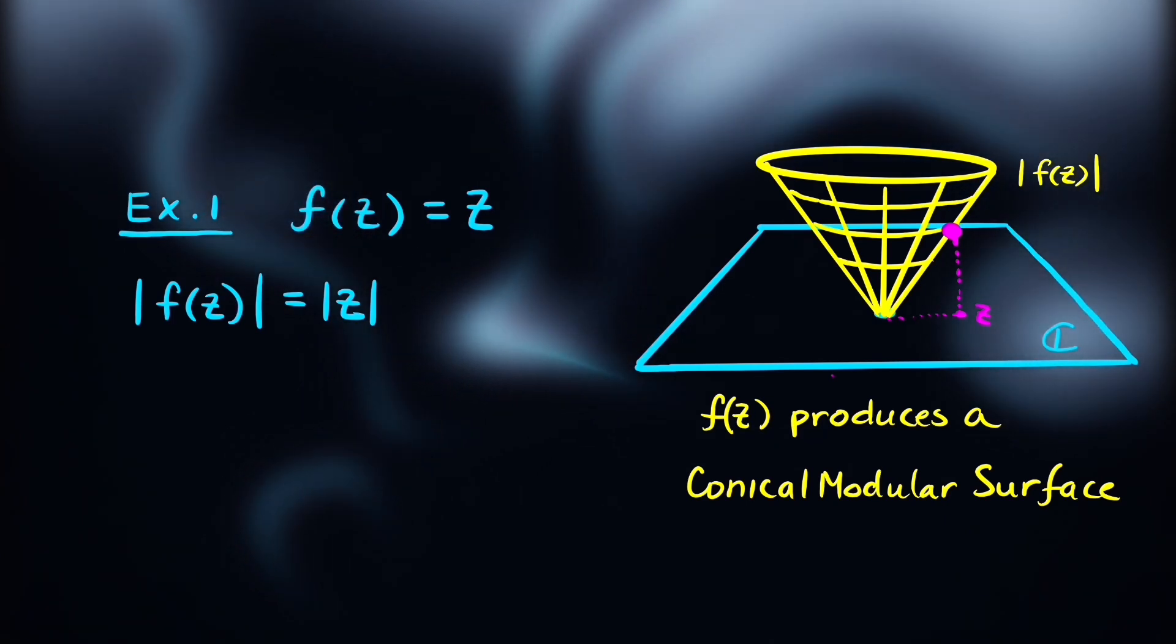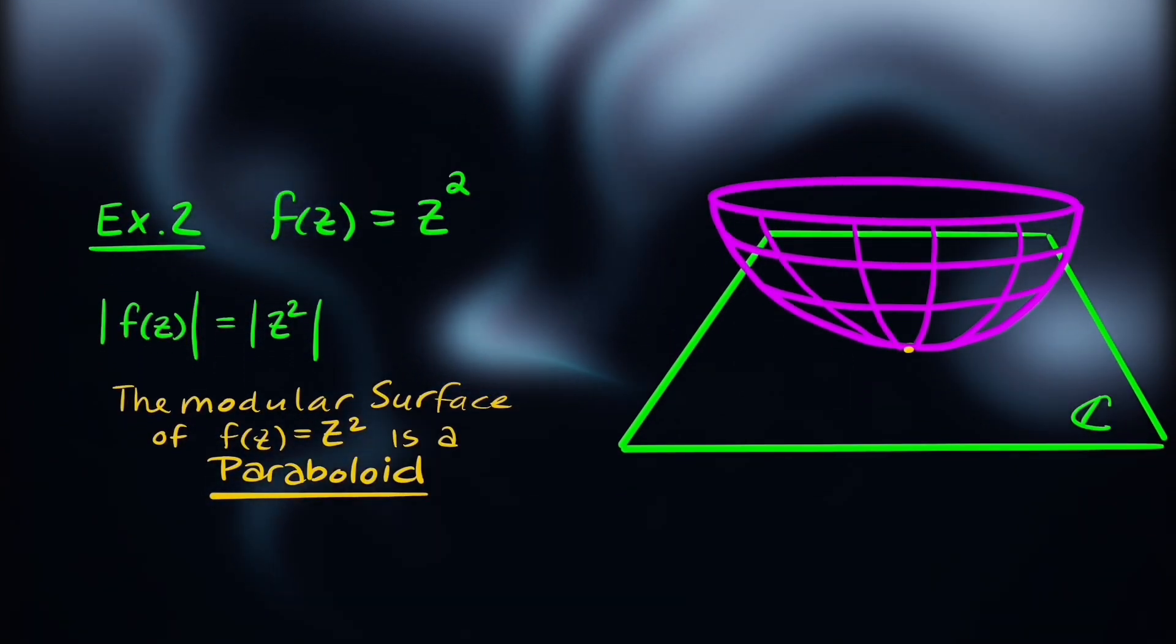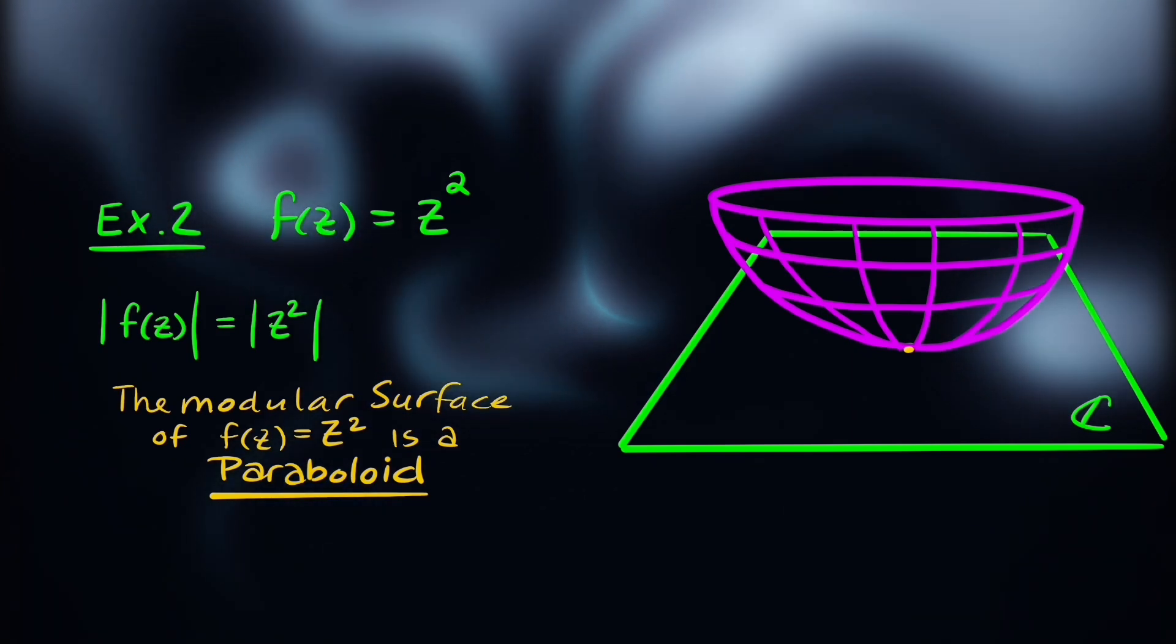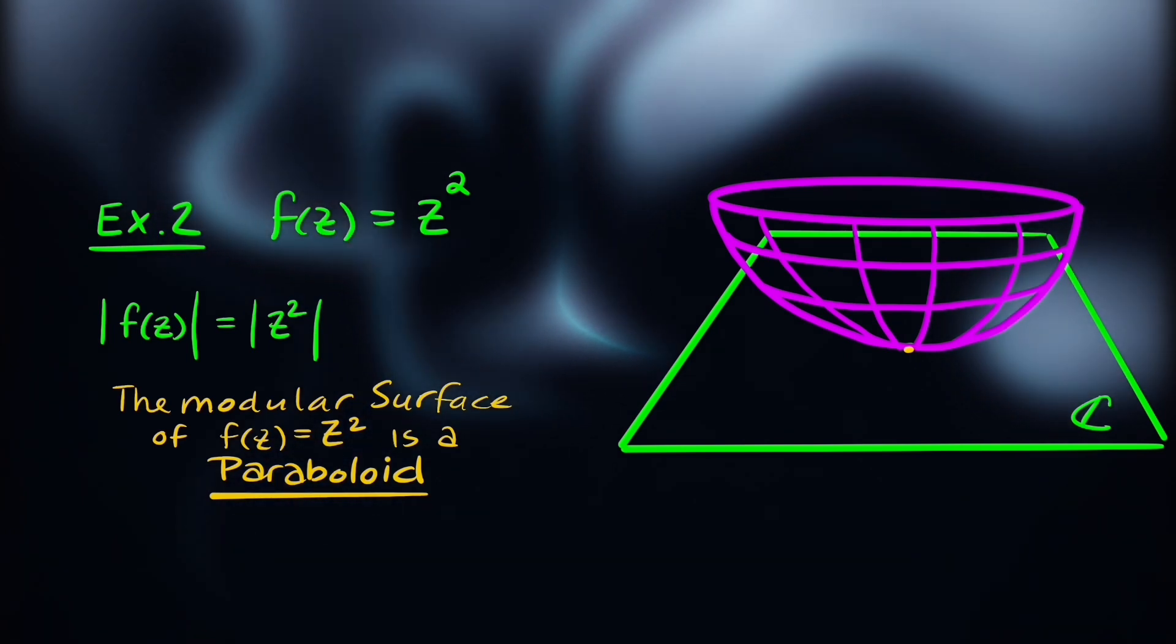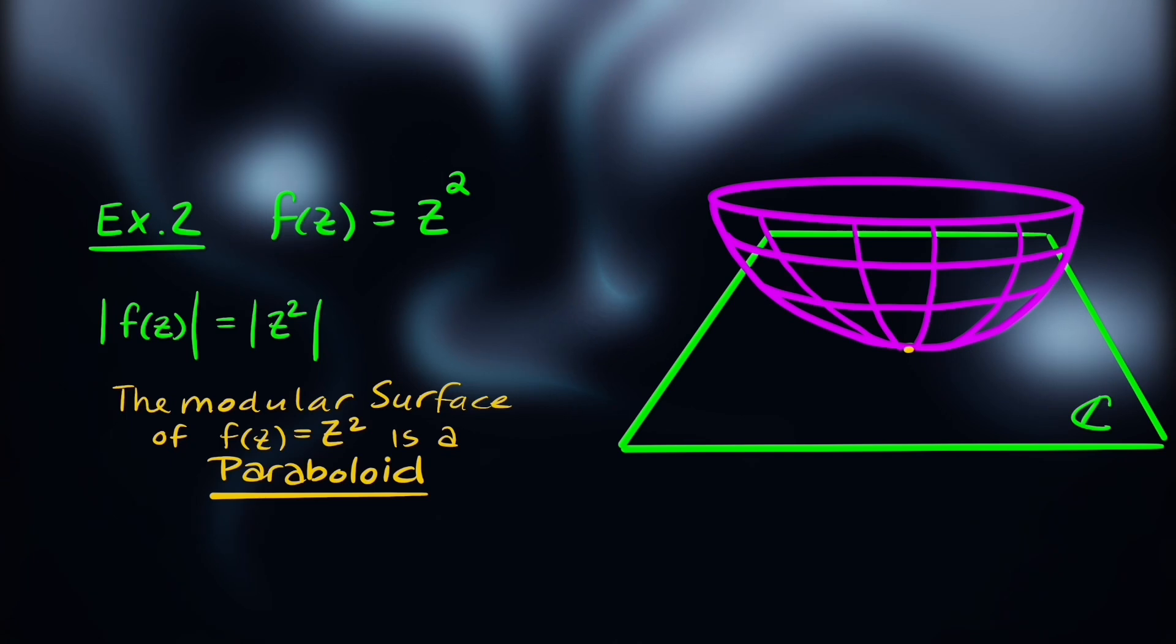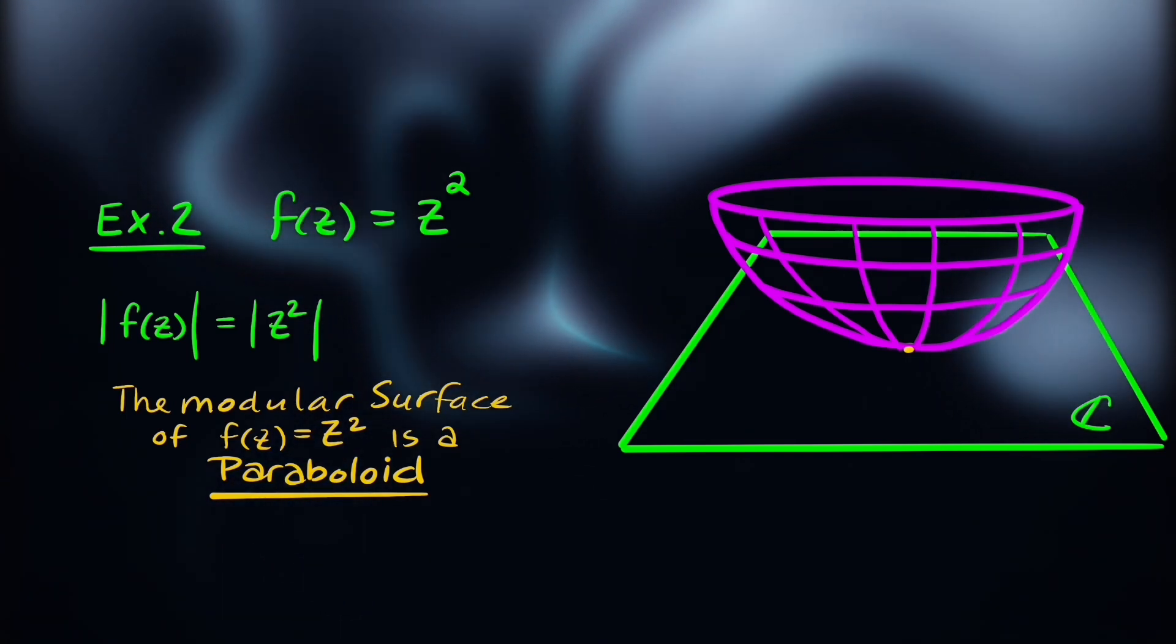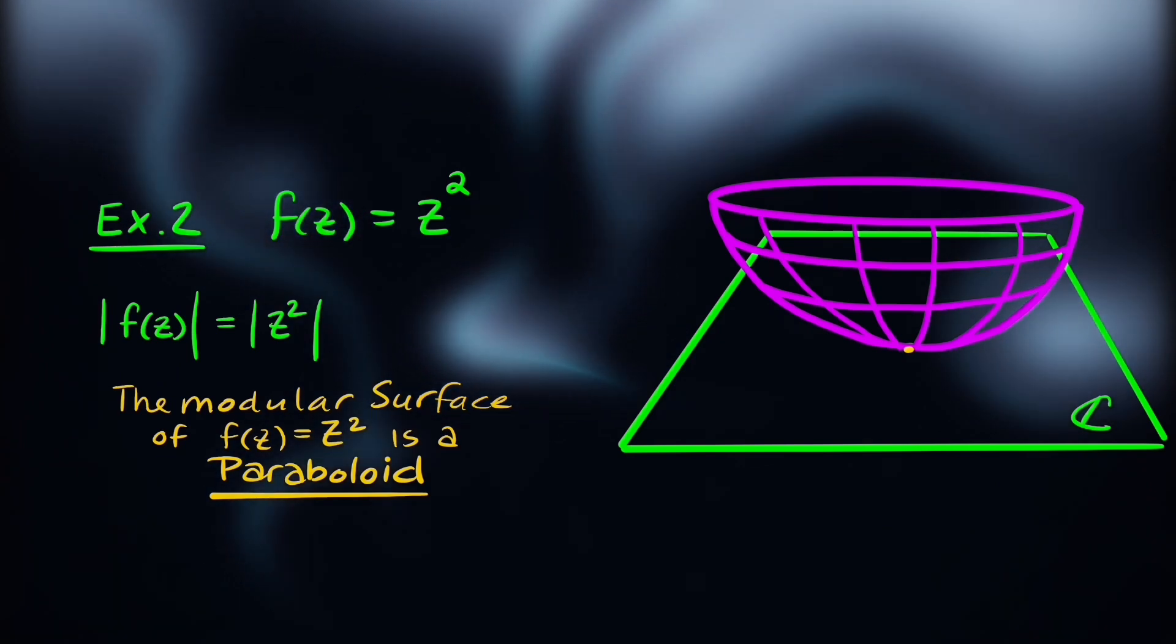Another example would be f equals z squared. The modulus of this function is a modulus surface that produces a paraboloid, a bowl-shaped surface. So modular surfaces can provide some insight into the behavior of complex functions, especially as z grows large.